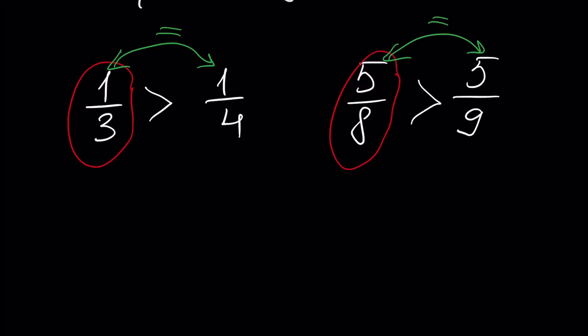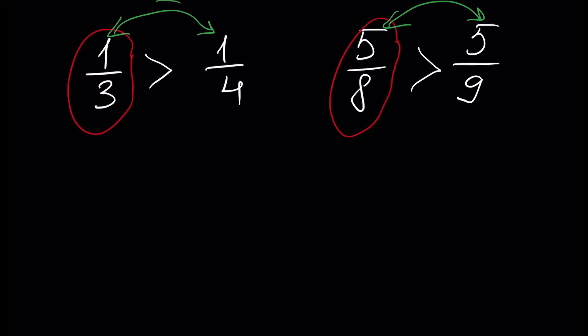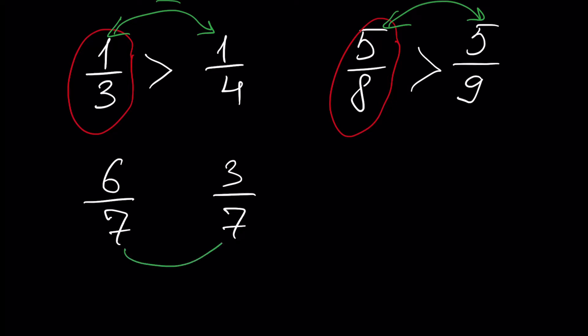Now, what if denominators are equal? If two fractions have the same denominator, the greater fraction is that with the greater numerator. For example, 6 over 7 and 3 over 7 — here the denominators are the same, and the bigger fraction is 6 over 7 because the bigger number is divided by the same number.